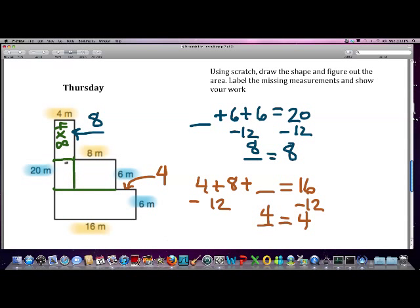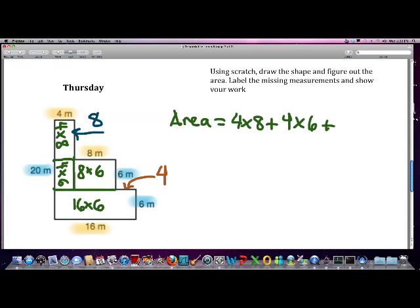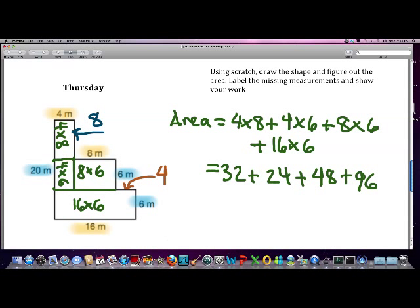Let's break this up here. So 4 times 8, that looks good. 4 times 6, and 8 times 6, and 16 times 6. I think I'm happy with all of those. So the area would be 4 times 8 plus 4 times 6 plus 8 times 6 plus 16 times 6. Did I do all these right? 4 times 8 is 32, 4 times 6 is 24, 8 times 6 is 48, and 16 times 6 is 96.